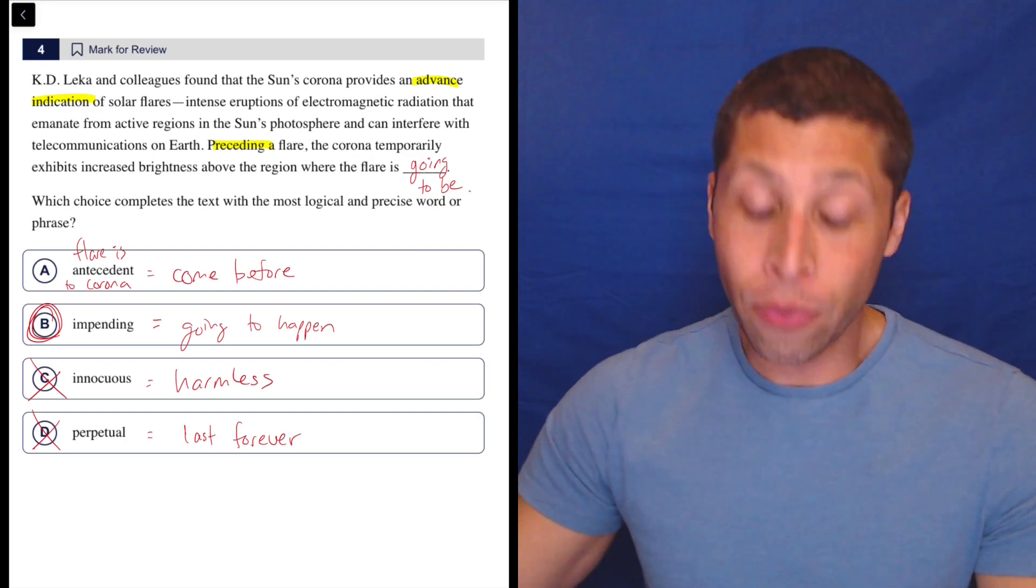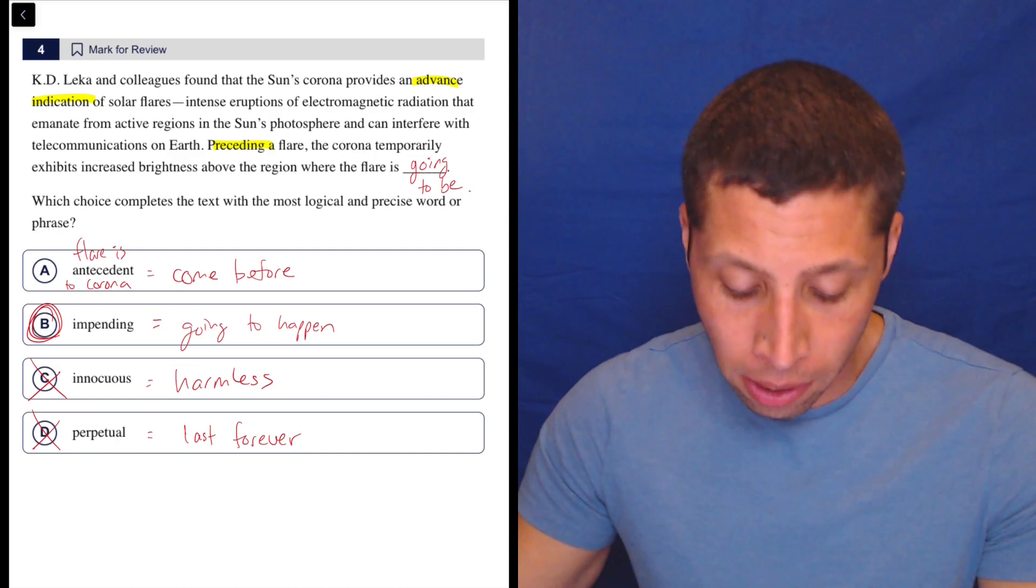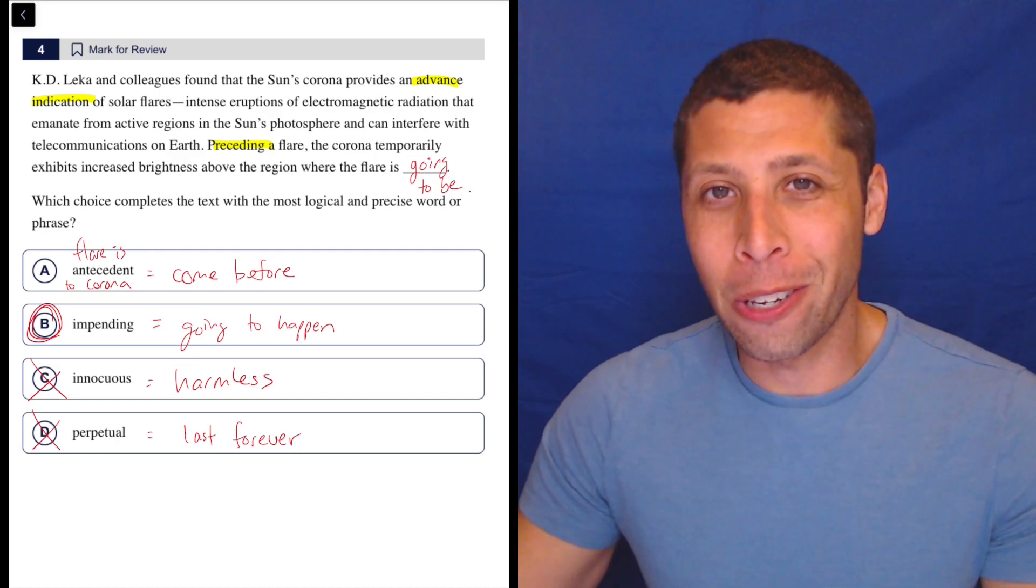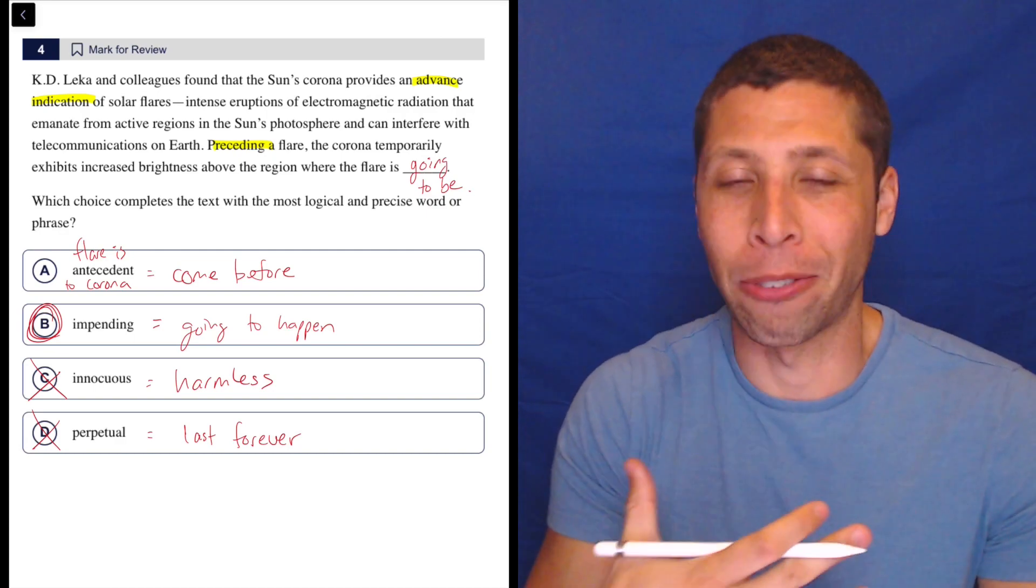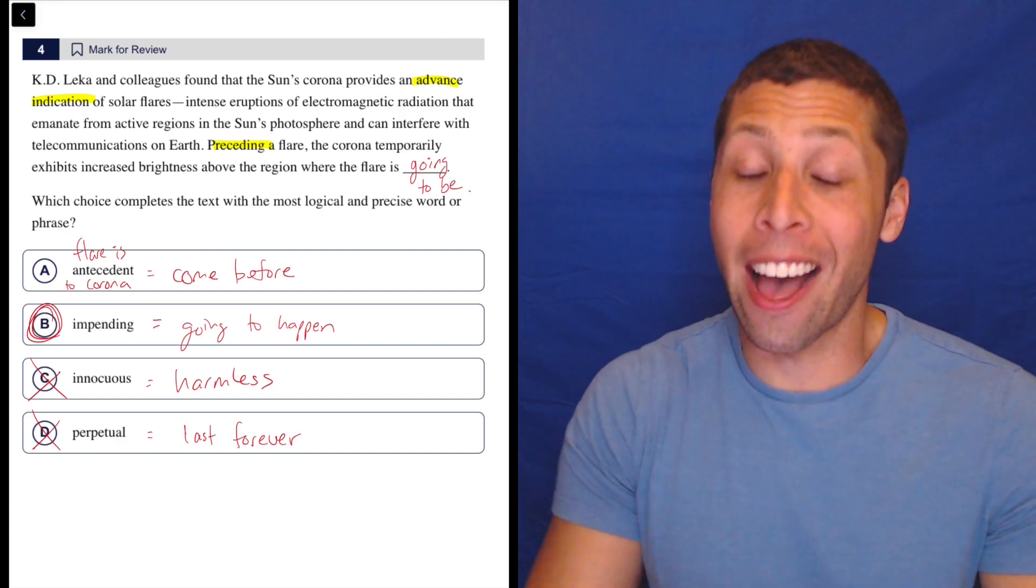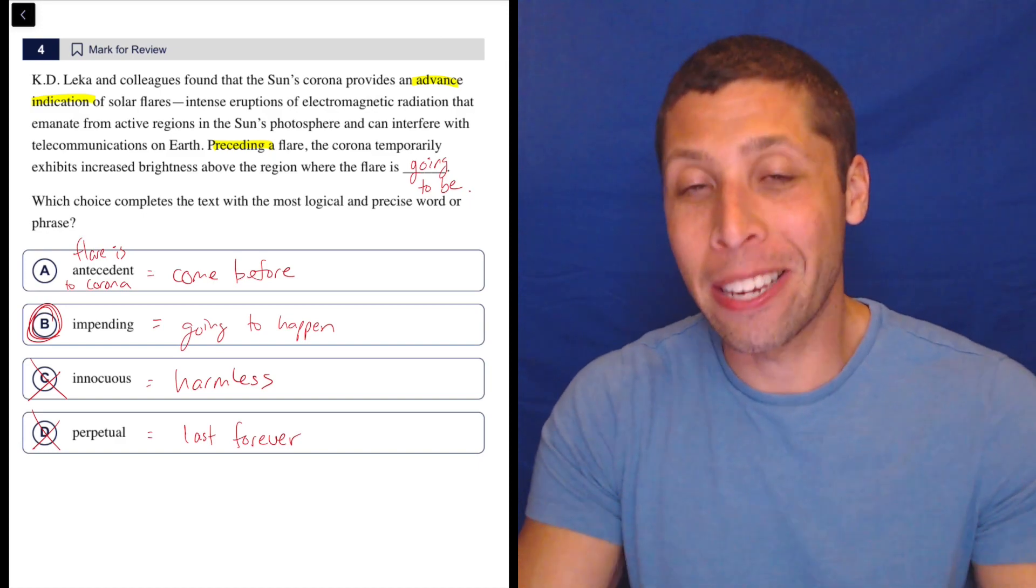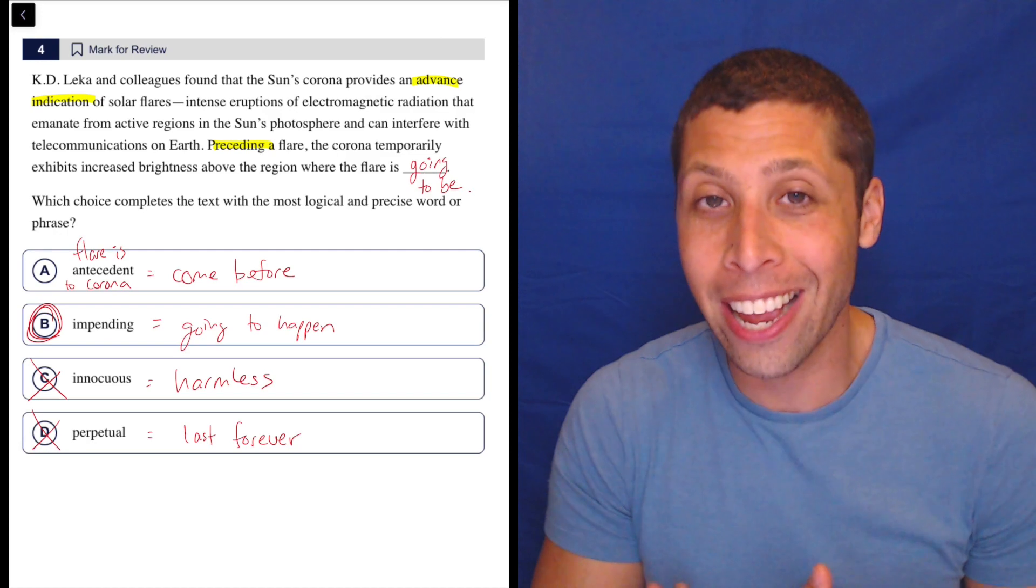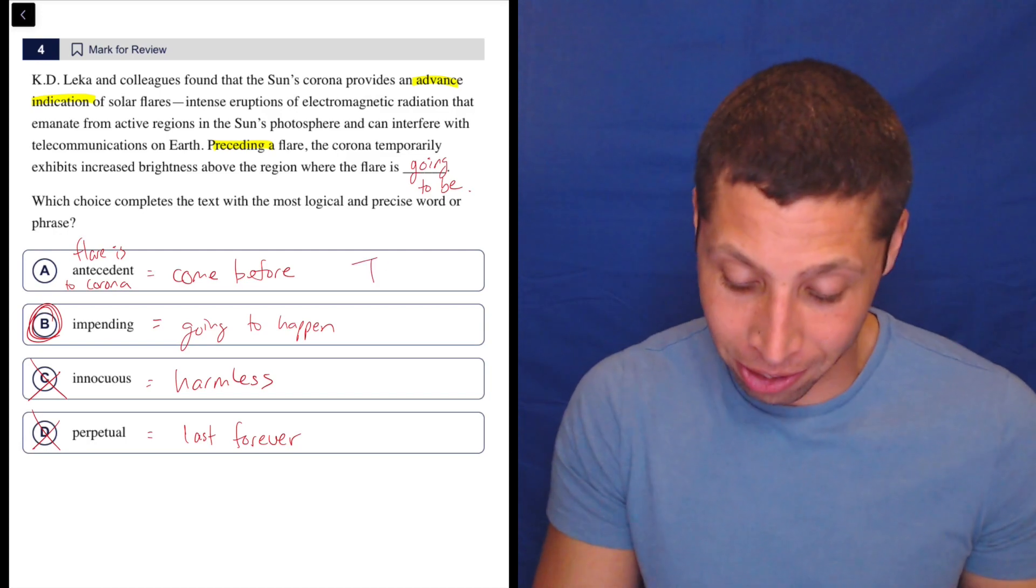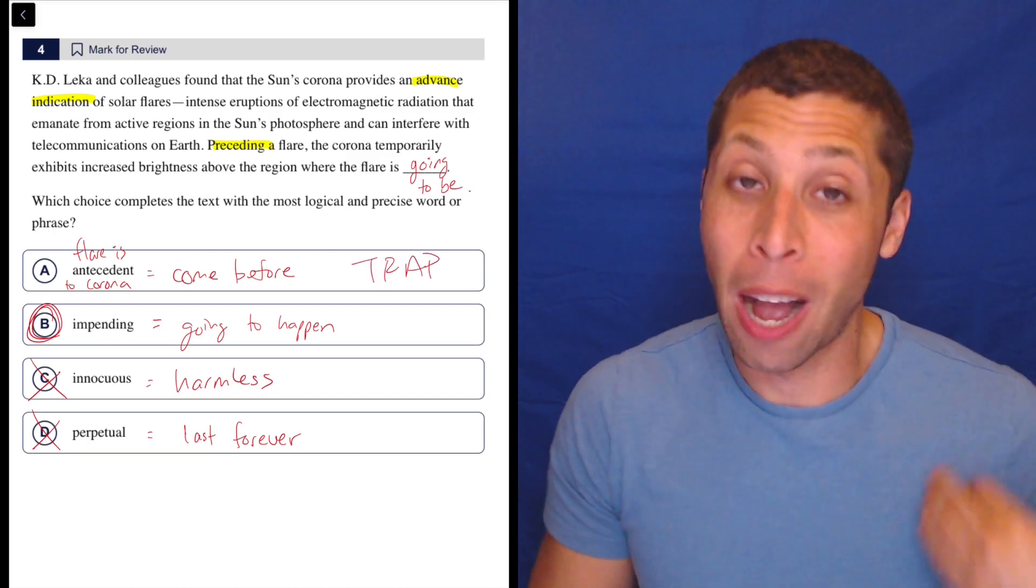So it's very sneaky what they're doing here. They know that you probably know these words enough that you understand that both have to do with time and coming before or after something else. But they gave you words that one of them just completely reverses the order of what they're saying. And notice that that trap answer choice A comes first.